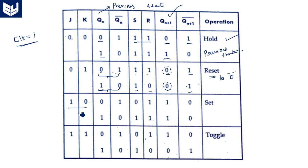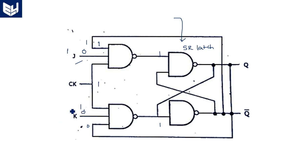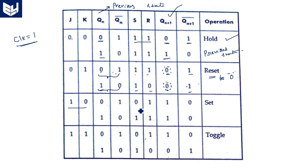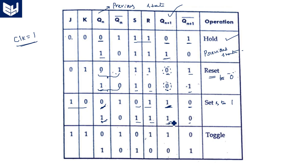Now, when J=1 and K=0, assuming previous state as 0 or 1, the inputs to S and R result in the output being set to 1. Whatever the previous state — whether 0 or 1 — the output is simply set to 1. That is why this state is called the set state.